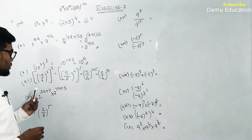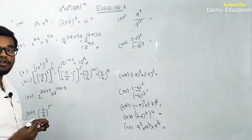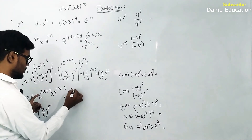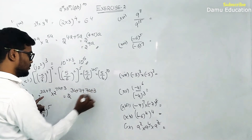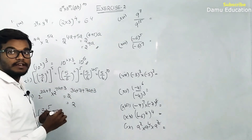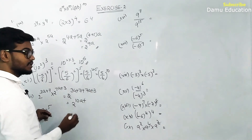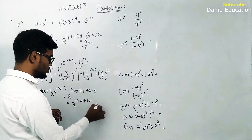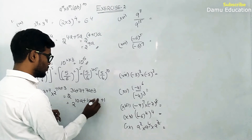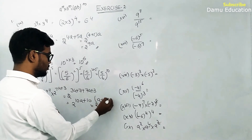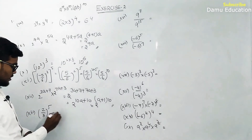Next: bases are same, powers are different. Using a power m plus n: 2 power 3a plus 7 into 2 power 7a plus 3. Adding exponents: 3a plus 7a is 10a, 7 plus 3 is 10. We can factor as 2 power 10(a plus 1).